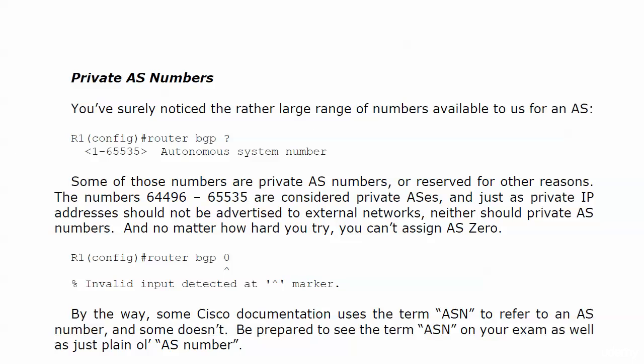We're going to talk about private AS numbers for a few minutes before we head to the BGP labs. You've noticed the rather large range of numbers available for an autonomous system: 1 through 65535. Some of these are considered private AS numbers, and while you can use them and the router won't complain, you don't want to advertise any AS in the range 64496 through 65535 to external networks.